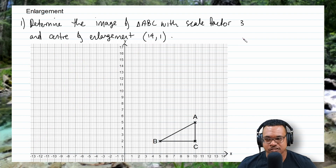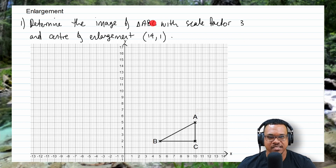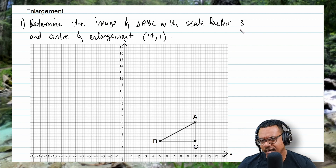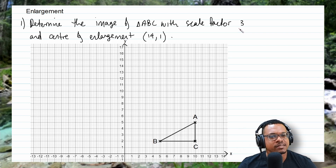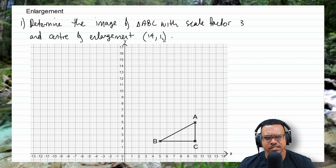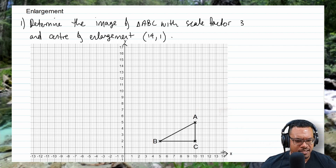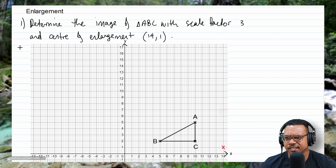Moving on to our next transformation: enlargement. We want to determine the image of triangle ABC with a scale factor of 3 and center of enlargement at (14, 1). A scale factor of 3 means the image is going to be 3 times bigger than the object. If the scale factor were a half, the image would be smaller — that's called a reduction. We plot the center of enlargement at (14, 1).